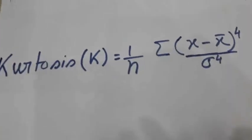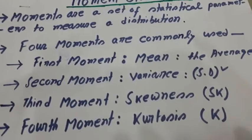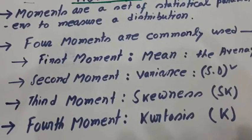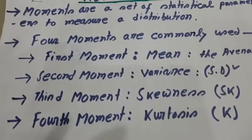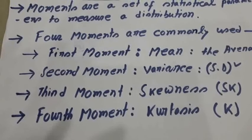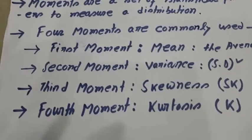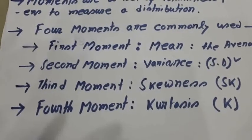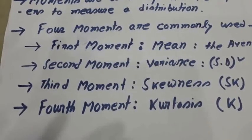This is all about the moment in statistics. We use all these moments to measure the distribution. Sometimes we use this moment to get the general idea of the data, sometimes to get the variability of the data, sometimes to get the asymmetry of the distribution about the data, and also sometimes to get the sharpness of the peak of the distribution curve.